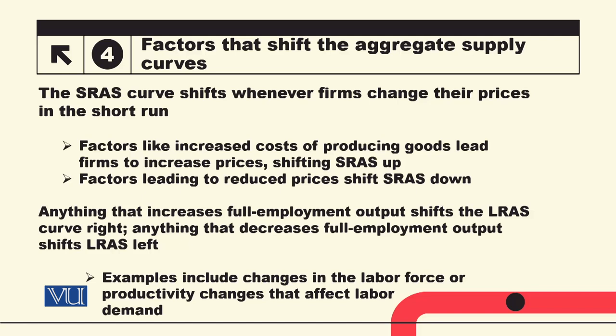تو یہ آج ہم نے ایک brief overview کیا کہ long-run aggregate supply curve اور short-run aggregate supply curve کیسے determine ہوتے ہیں اور ان کے shifts کن وجوہات کی بنا پر ہوتے ہیں۔ Thank you very much۔